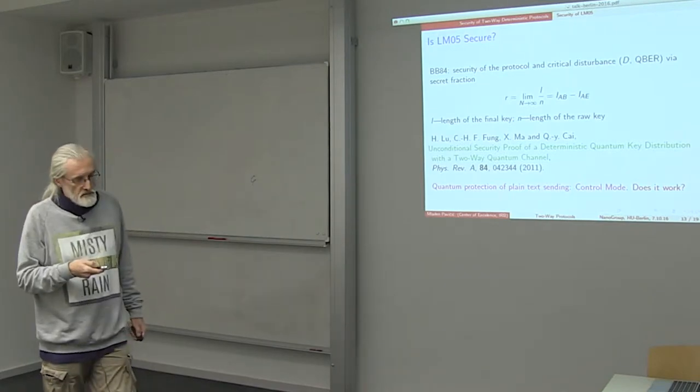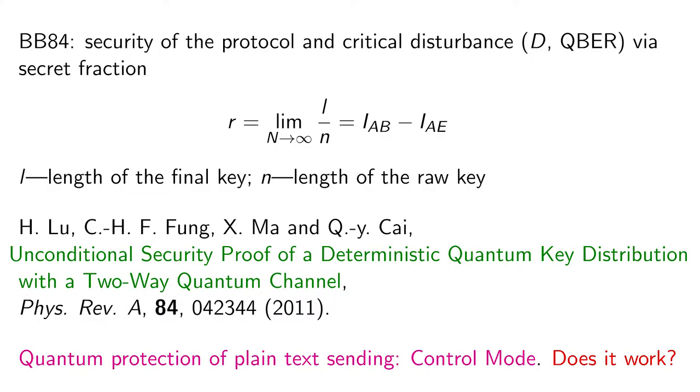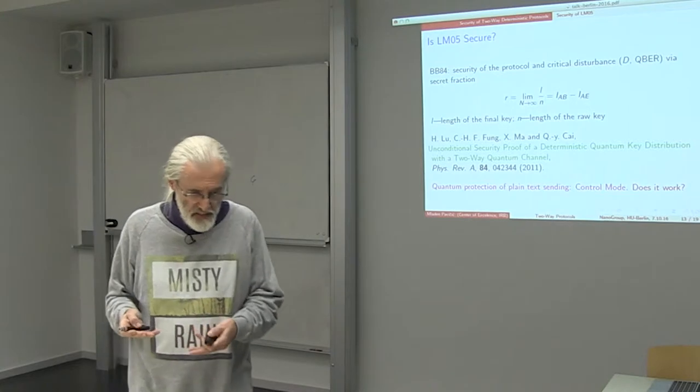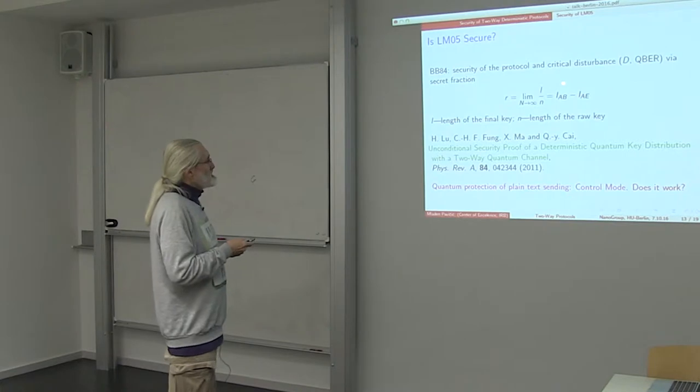To answer that question, let us look at the standard approach to the security by means of evaluating the secret fraction of the length of the final key with respect to the length of the raw key, which in the message mode should be 1 because Alice sends what Eve can read and Eve sends what Bob can read.